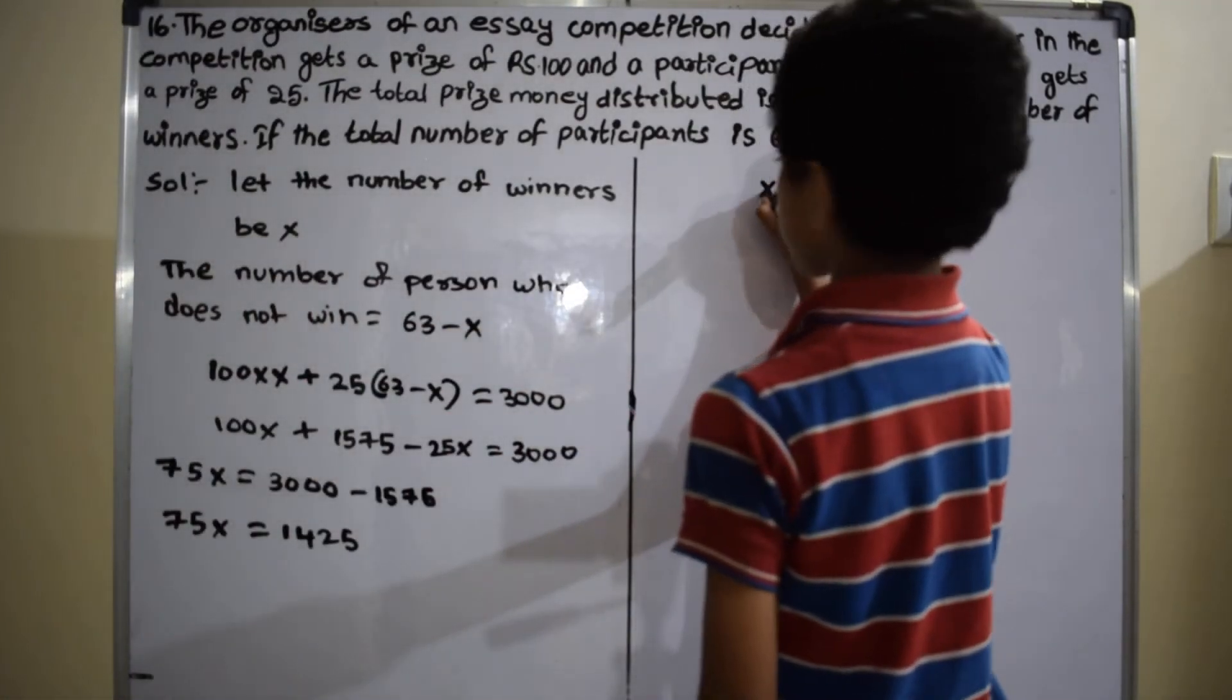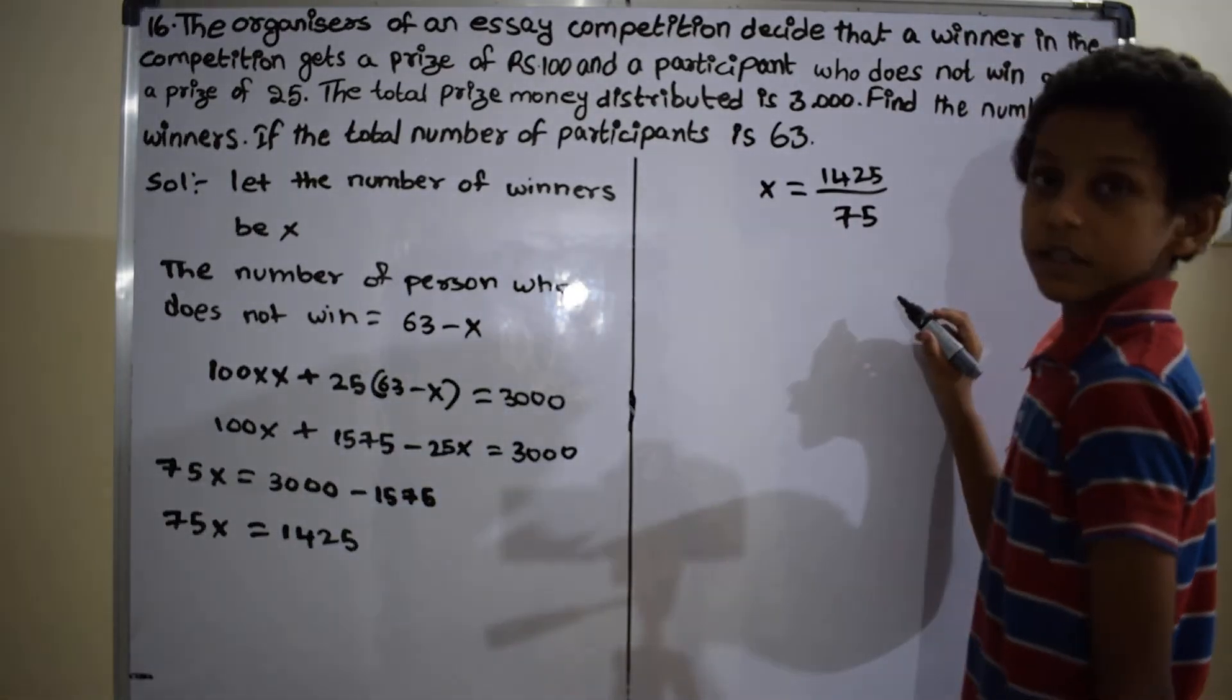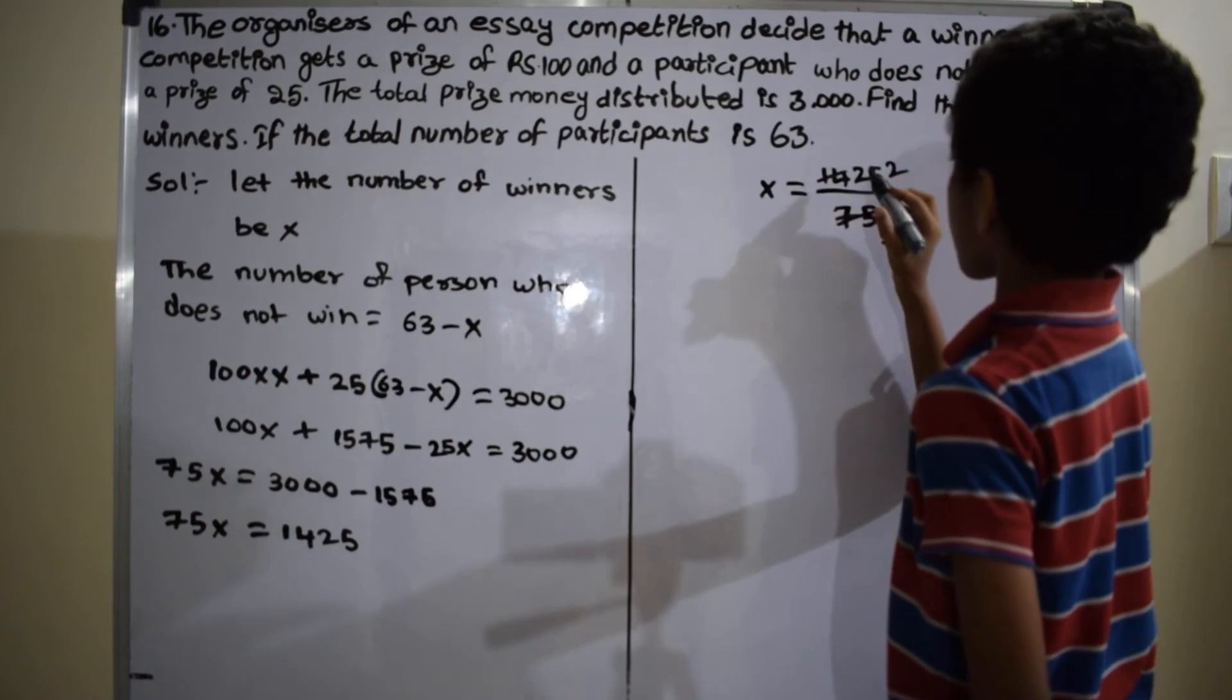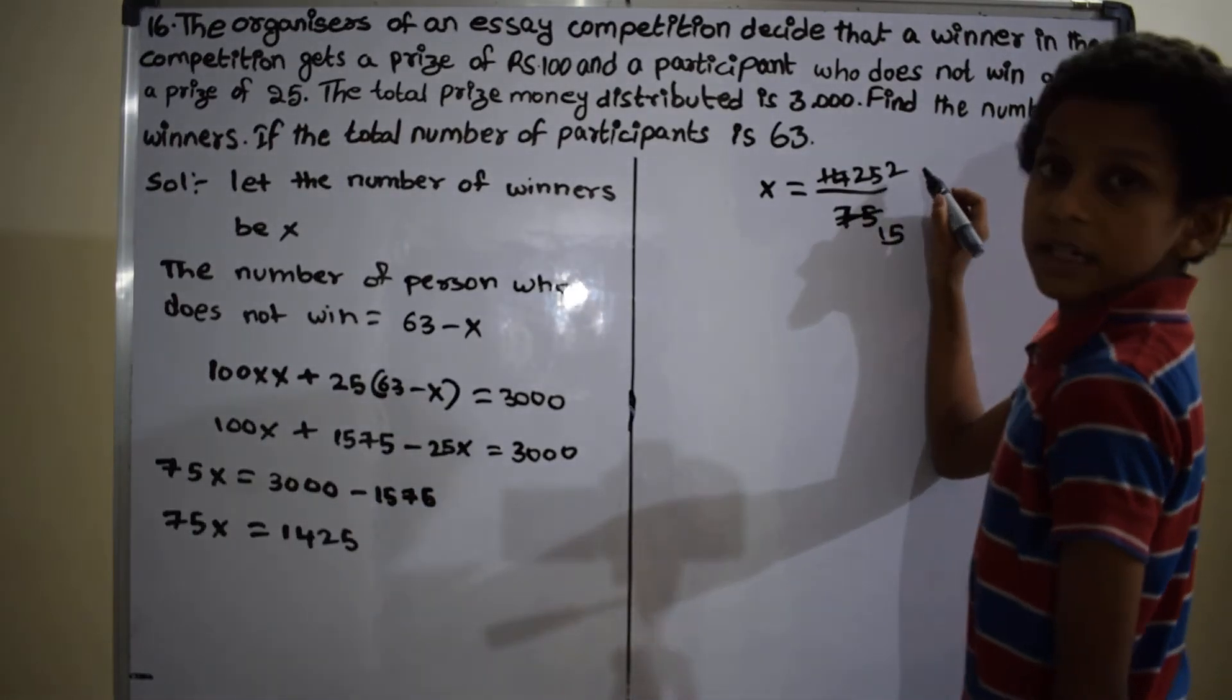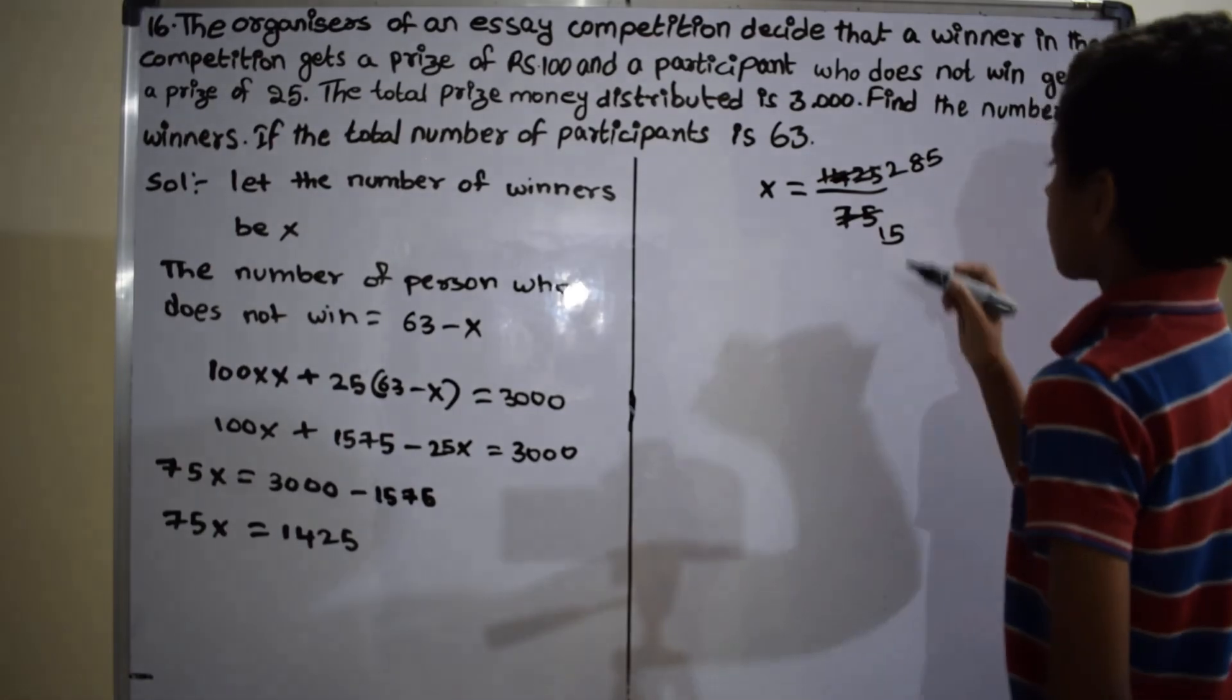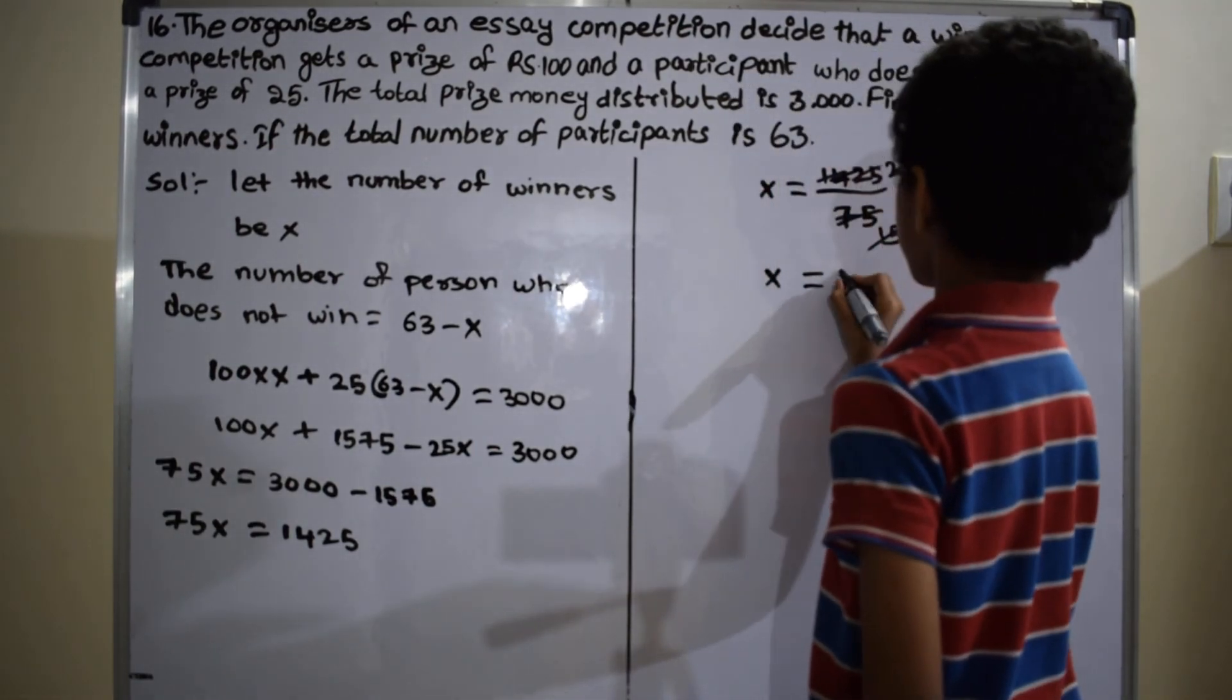So x equals 1,425 divided by 75. For 1,425 and 75, 5 is a common factor. 5 divides 75 fifteen times and 5 divides 1,425 to get 285. Then 15 divides 285 nineteen times. Therefore x equals 19.